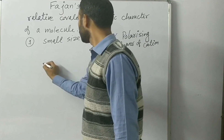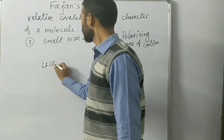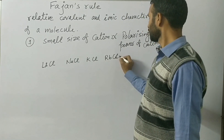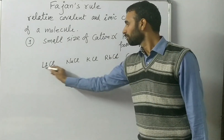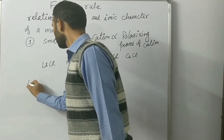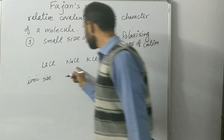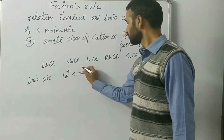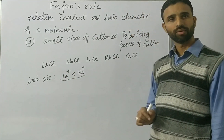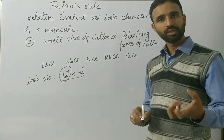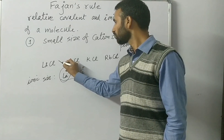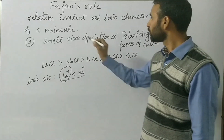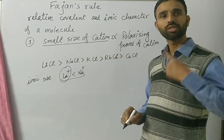For example, we have lithium chloride, sodium chloride, potassium chloride, rubidium and cesium chloride — these are chlorides of alkali metal cations. If we compare ionic size, the chloride anion is the same. The ionic size of the lithium ion is smallest. Lithium is smaller than sodium, so lithium has a high positive field and strong polarizing power. That is why lithium chloride is more covalent than sodium chloride, which in turn is more covalent than potassium, rubidium, and cesium chloride. So, smaller the size of the cation, more is the covalent character.